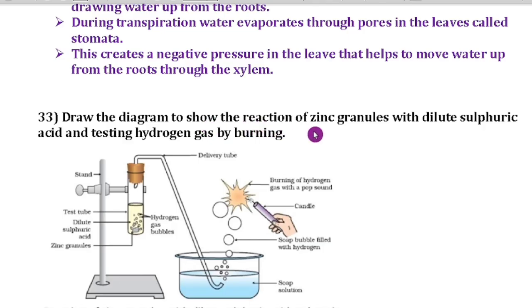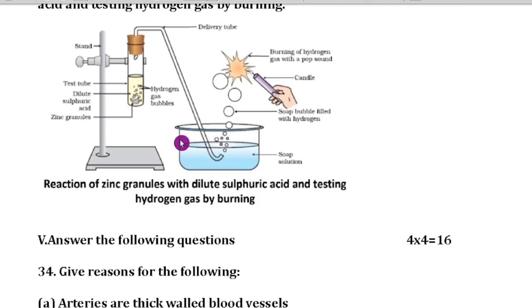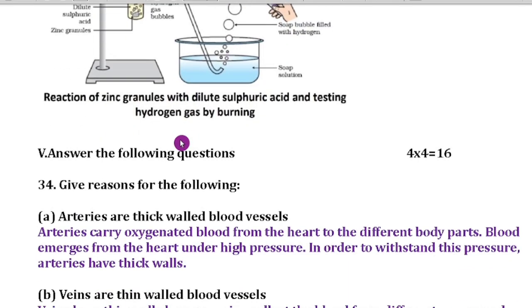Question number 33: Draw the diagram to show the reactions of zinc granules with dilute sulfuric acid and test hydrogen gas by burning. This is the diagram. Very important diagram, children. Concentrate from the chemistry part.